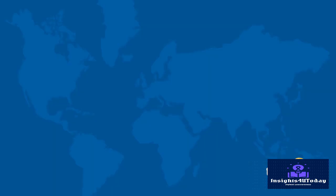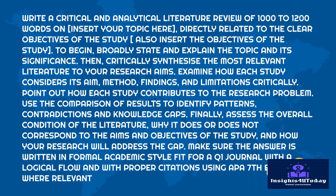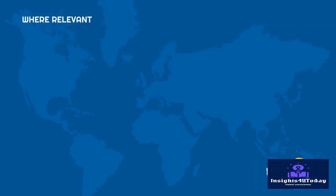Prompt ChatGPT deep research to write a critical and analytical literature review of 1,000 to 1,200 words on your topic, directly related to the clear objectives of the study. Also insert the objectives of the study. To begin, broadly state and explain the topic and its significance. Then, critically synthesize the most relevant literature to your research aims. Examine how each study considers its aim, method, findings, and limitations critically, and point out how each study contributes to the research problem. Use the comparison of results to identify patterns, contradictions, and knowledge gaps. Finally, assess the overall condition of the literature, why it does or does not correspond to the aims and objectives of the study, and how your research will address the gap.